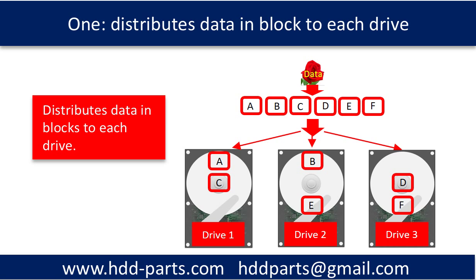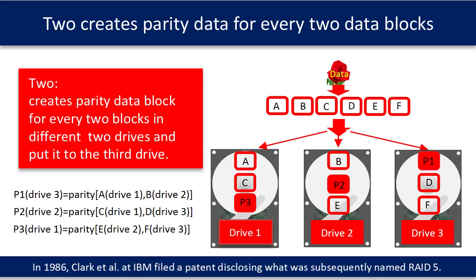The data blocks are distributed to drive 1, drive 2, and drive 3. This picture shows the second thing RAID 5 does: create parity data for every two data blocks. The parity data on the diagram is P1, P2, P3. The formula RAID 5 uses is: P1 equals parity of A and B, P2 equals parity of C and D, P3 equals parity of E and F.